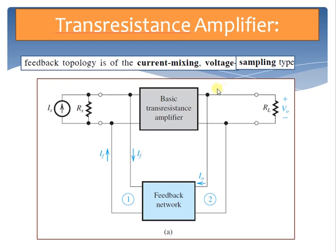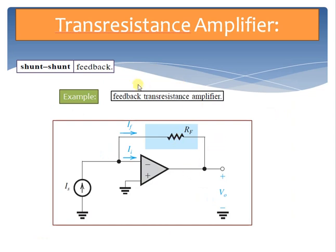The shunt-shunt topology equips the transresistance amplifier with the desirable attributes of lower input and lower output resistances. A good example is a feedback transresistance amplifier — essentially an inverting amplifier but with a current source input rather than a voltage. The circuit uses an op-amp with a feedback resistance RF that senses the output voltage and provides a feedback current IF. The input current II at the input node is the difference IS minus IF.